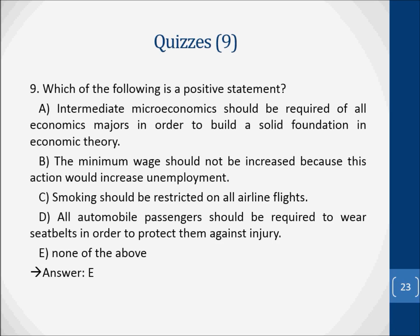Question nine: which of the following is a positive statement? A. Intermediate microeconomics should be required of all economics majors in order to build a solid foundation in economic theory. B. The minimum wage should not be increased because this action would increase unemployment. C. Smoking should be restricted on all airline flights. D. All automobile passengers should be required to wear seat belts in order to protect them against injury. E. None of the above. The answer is E — none of the above are positive statements.